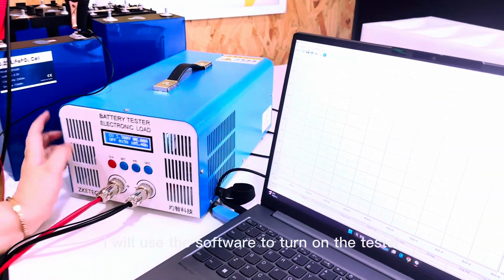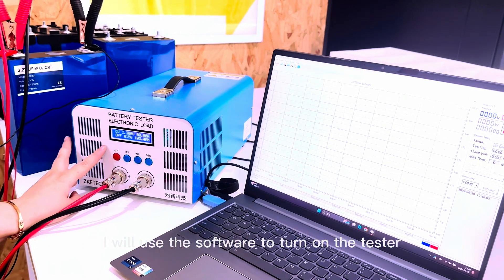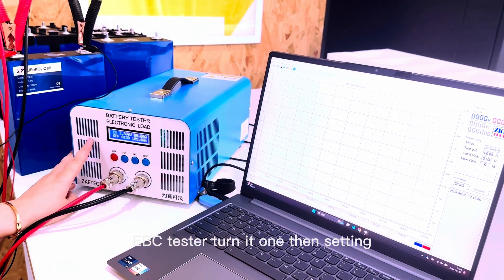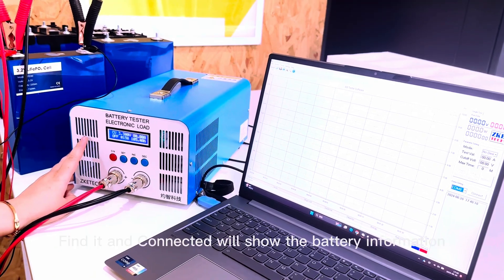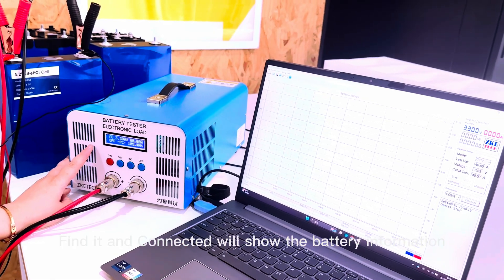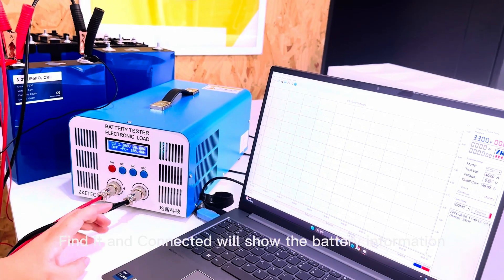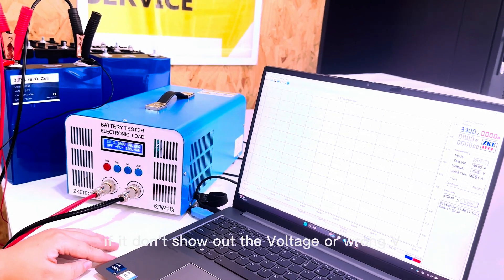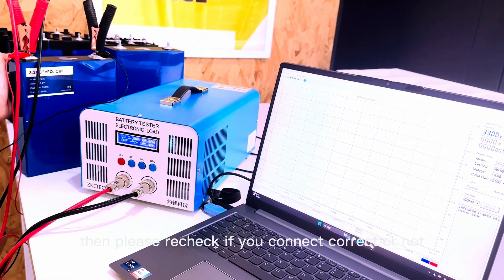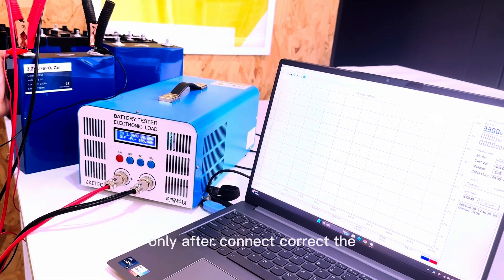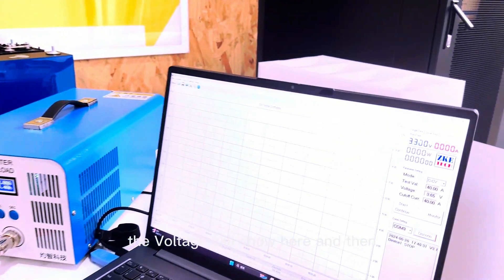I will use the software to turn the tester, the EBC tester, turn it on. So we just set in and find this one, click connect. When connected, it will show this battery information. If it doesn't show the voltage or nominal voltage, then please check if you connected correctly or not. Only after connecting correctly will the voltage show here.